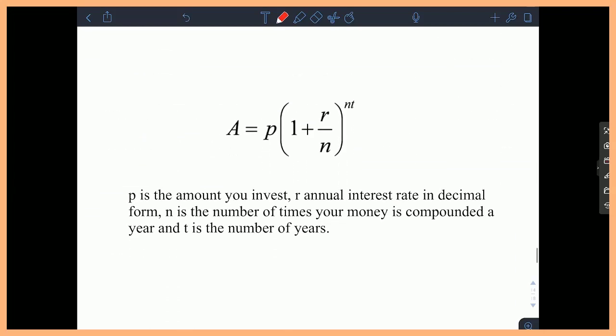So first important formula is your investment formula. A is going to represent the amount of money at the end of the investment cycle. P represents the initial amount of the investment. R represents the interest rate, always as a decimal. And N represents the number of times your money is compounded. So like quarterly is four times per year, so N would be four. Semi-annually, for example, would be two times per year, so N would be two, so on and so forth.